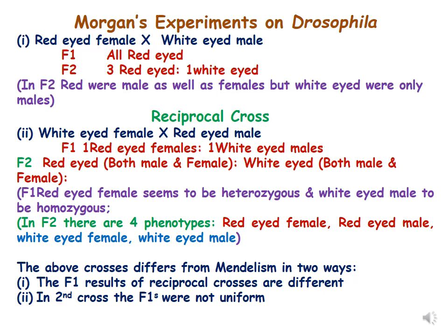In the first cross — red-eyed female with white-eyed male — all F1 were red-eyed, and in F2 a 3 red-eyed to 1 white-eyed ratio was obtained. In the reciprocal cross — white-eyed female with red-eyed male — F1 showed an equal proportion of red-eyed females to white-eyed males, and F2 showed red-eyed and white-eyed males and females in equal proportion.